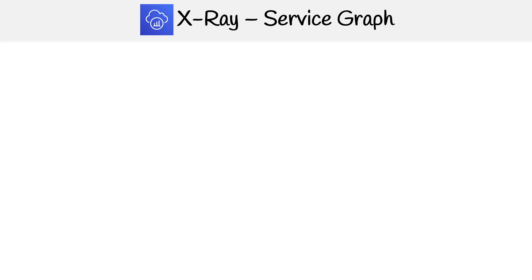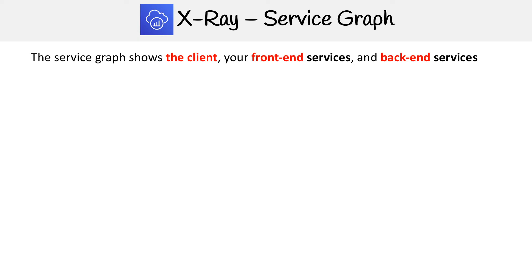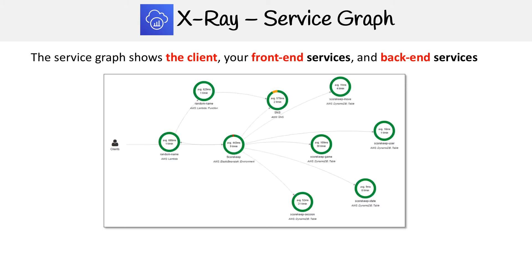Let's first look at the service graph, which is visible when you click into a trace. The service graph shows the client, your front-end services, and back-end services. It might not be very clear which is the client, front-end, and back-end, so I'm going to help divide this up so that we can make sense of that.